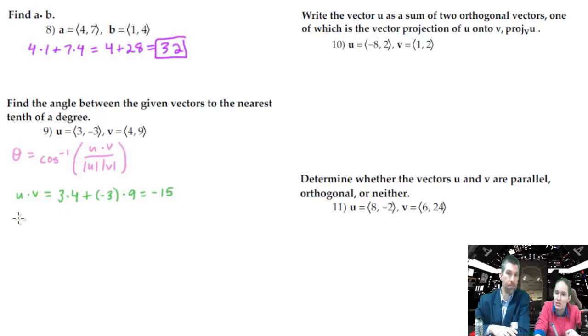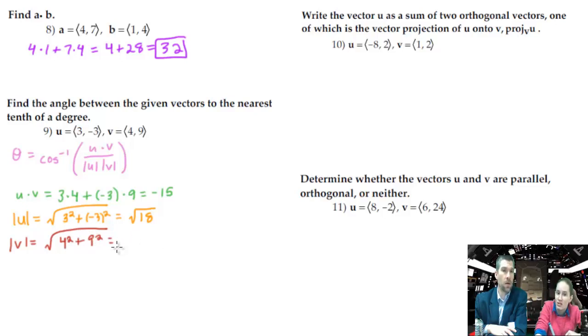Then we find the magnitude of each. The magnitude of u - remember that that's what absolute value bars mean, distance from zero. How far are you traveling? 3 squared plus negative 3 squared, which is square root of 18. There's no need to simplify that because we're going to have to just decimal it out inside arc cosine. Then the square root of 4 squared plus 9 squared, which is 16 plus 81. 16 plus 81, which is 97.